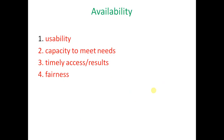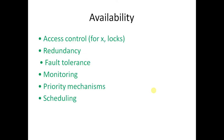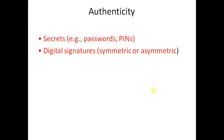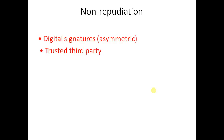Availability refers to usability — the capacity to meet needs, timely access to results, and continuity. Availability mechanisms include access control, redundancy, fault tolerance, monitoring, and purity mechanisms. Authentication and non-repudiation ensure no denial of origin or modification — an author is not able to deny their actions. Authenticity is achieved through secrets like passwords and PINs, and digital signatures. Non-repudiation is achieved through digital signatures and trusted third parties.